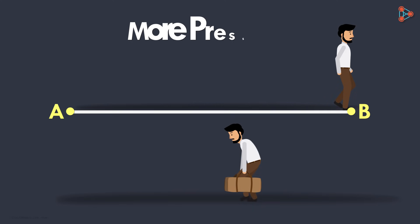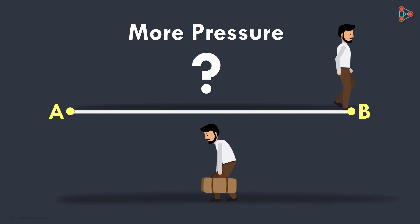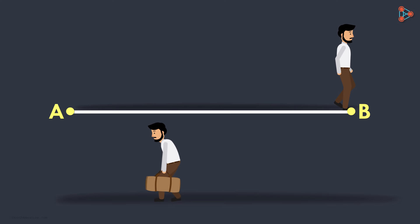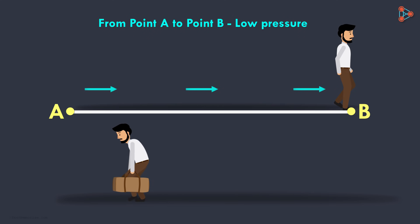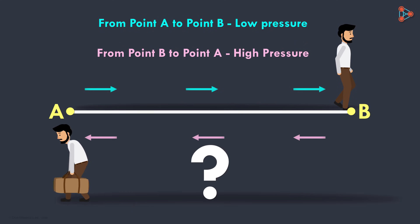In which case would your body feel more pressure? Practically, while moving from point A to point B, you can walk with ease without much pressure on your body as compared to this case. And what's the reason behind it? This is because you need to carry only your body weight while going from point A to point B.